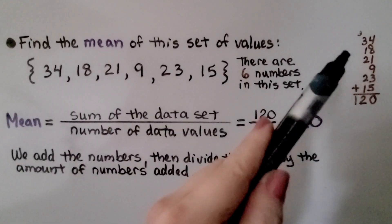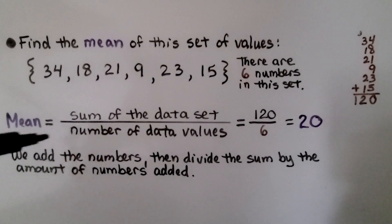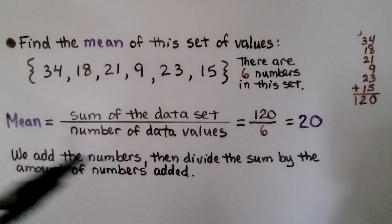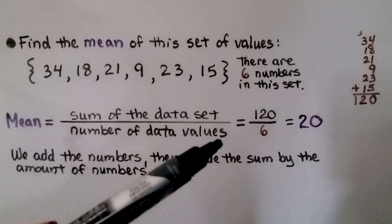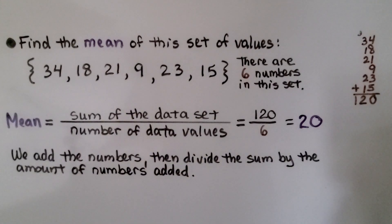So the mean is going to equal that sum of the data set, that 120, divided by the number of data values. We had six in the set. Our mean is 20. We add the numbers, then divide the sum by the amount of numbers that we added.